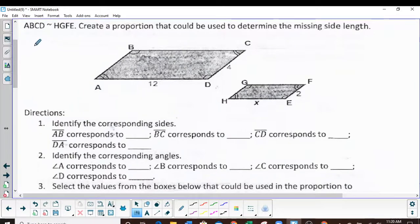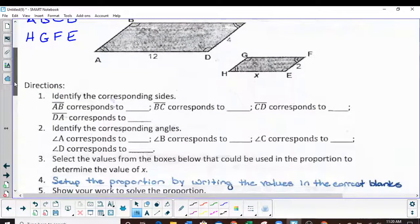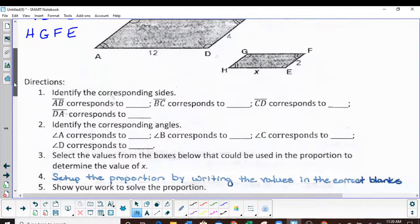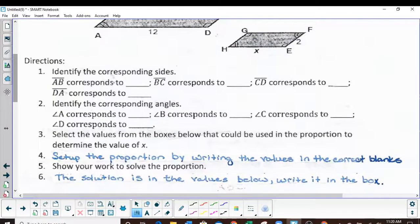It says identify the corresponding sides, number one. AB corresponds to, if you look at your letters, just HG. BC corresponds to GF.